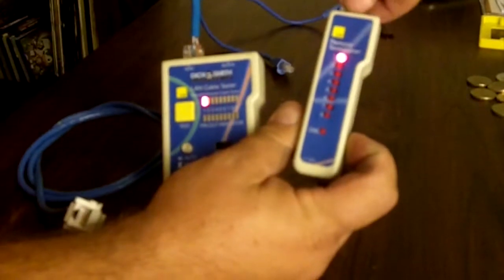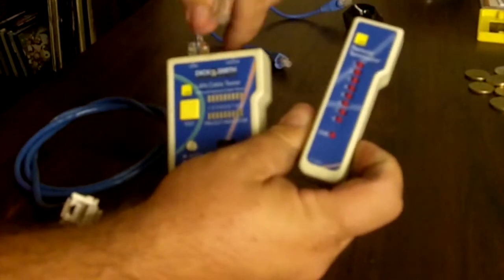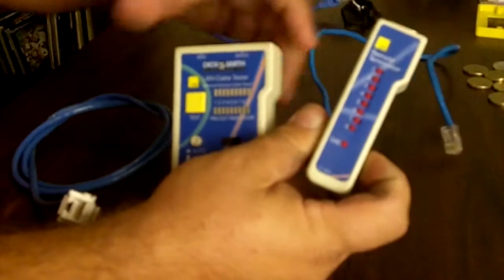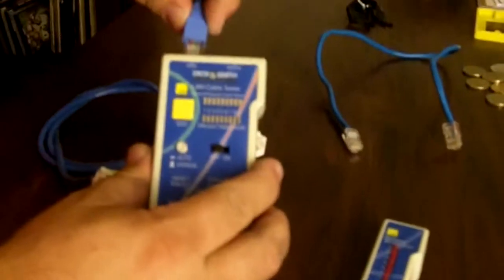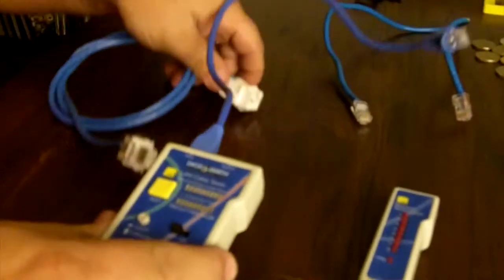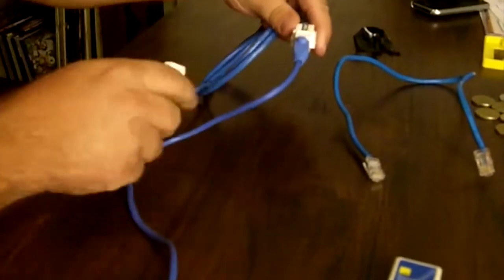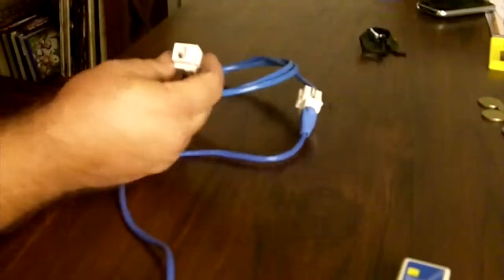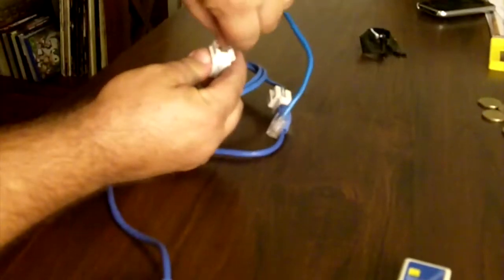There we go. So now we know our two patch leads are correct. What you would do now is plug in one lead into your wall plate like so, and the other end which is in the bedroom or somewhere else.